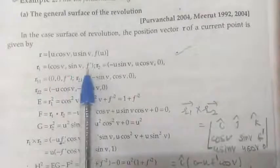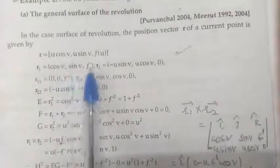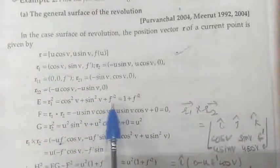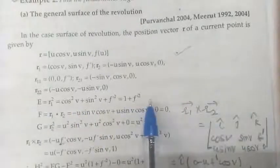Now, let us find all the fundamental magnitudes. The first fundamental magnitude E is the dot product of r₁ with itself, which gives cos²v + sin²v + f'² = 1 + f'². This is E. To find F, which is the dot product of r₁ and r₂, we get −u sin v cos v + u sin v cos v = 0, so F = 0.